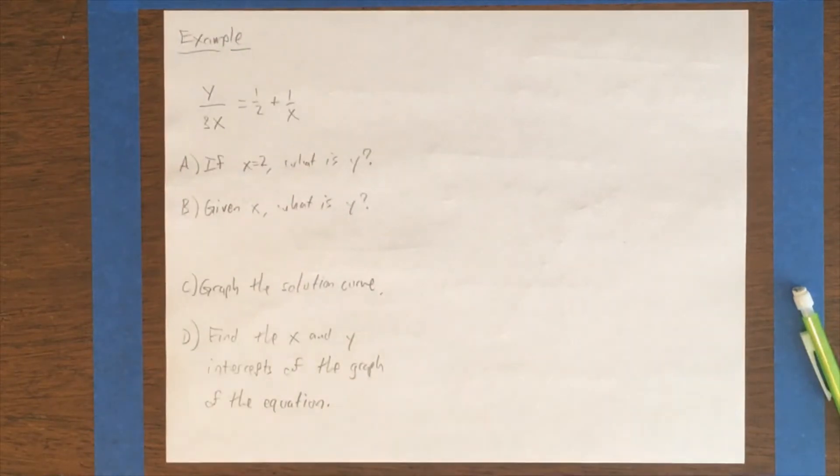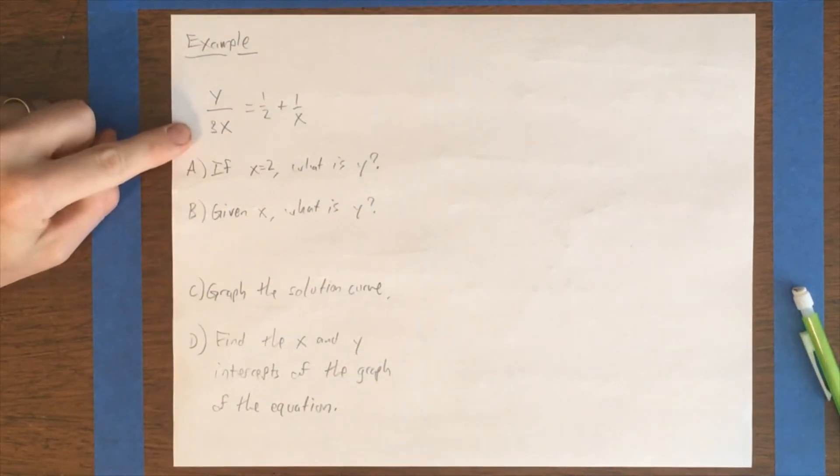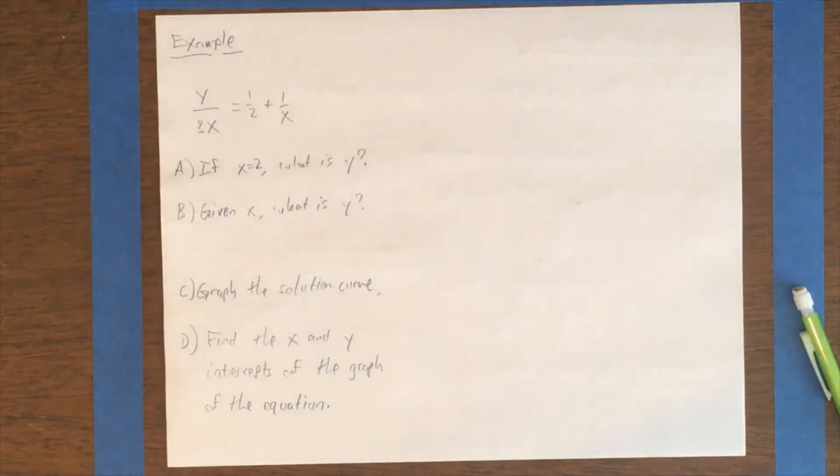All right, let's do an example. We're talking about graphs of equations, and here we have an equation: y divided by 3x equals 1 half plus 1 over x. So it's an equation of two variables. Its graph is going to be a curve in a 2D coordinate system.